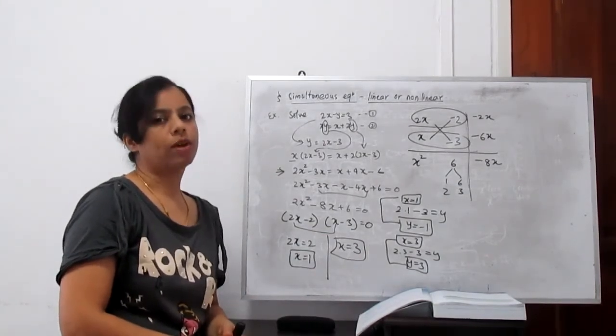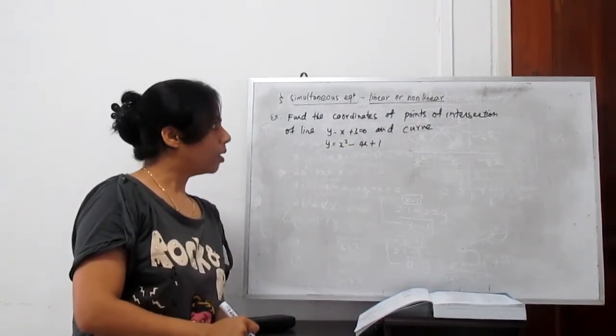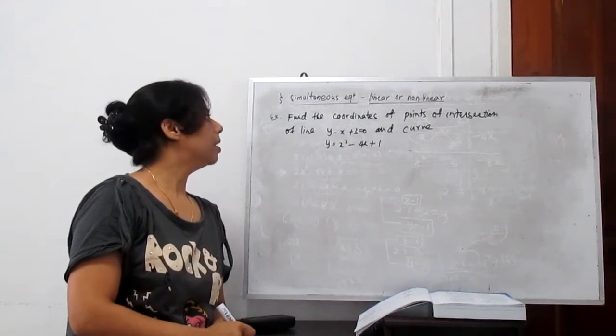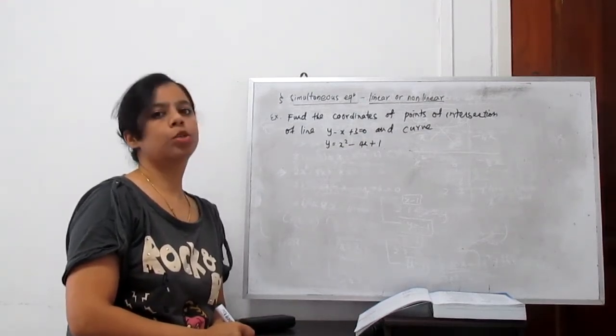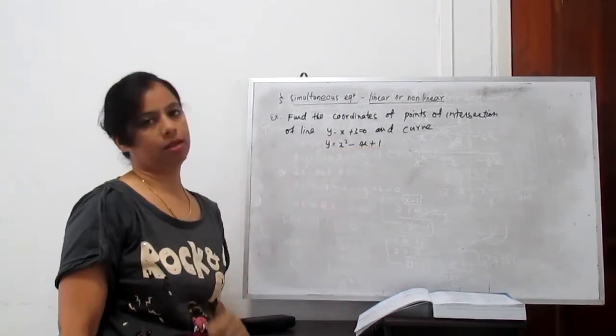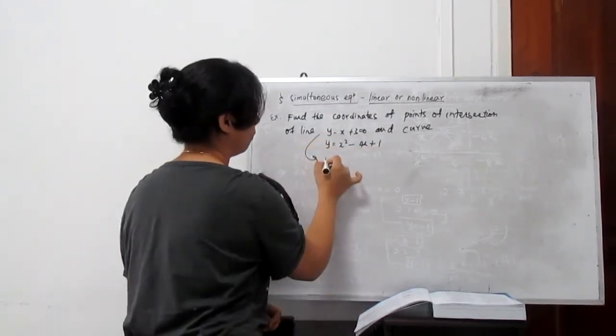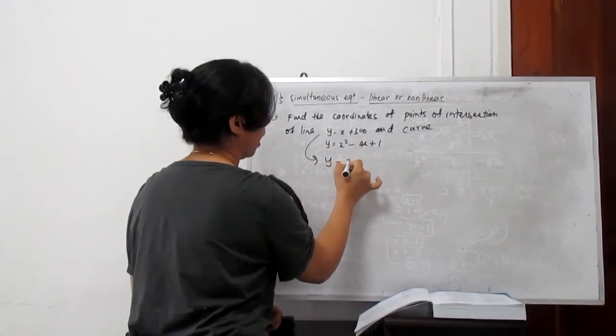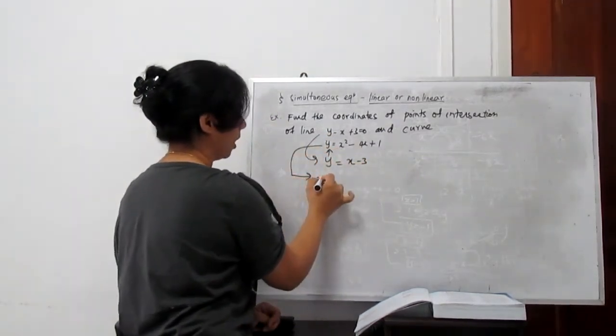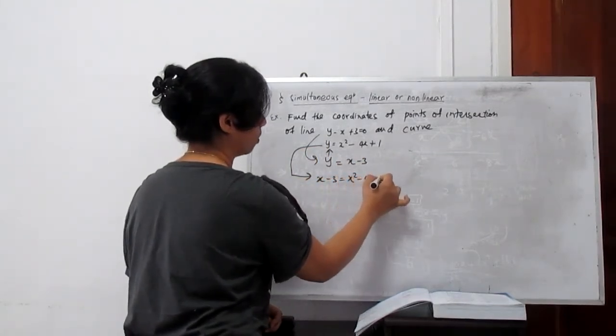I will show you one more example. Another, they ask find the coordinates of the point of intersection of line y minus x plus 3 equals 0, and another is y equals x squared minus 4x plus 1. So same process. You need to substitute from first y is x minus 3, substitute here.